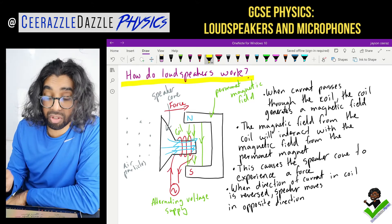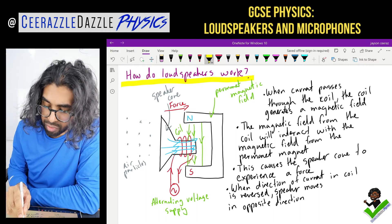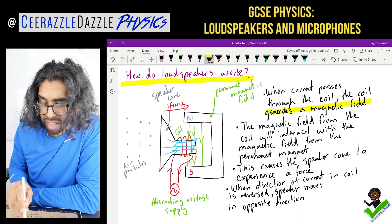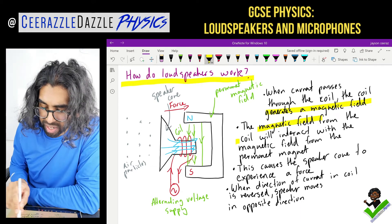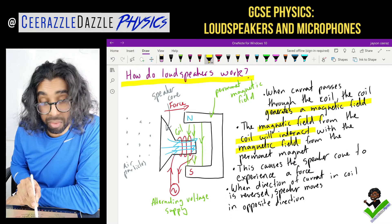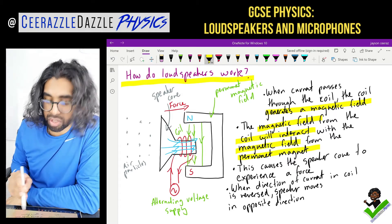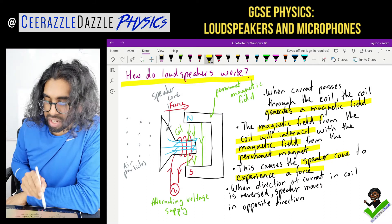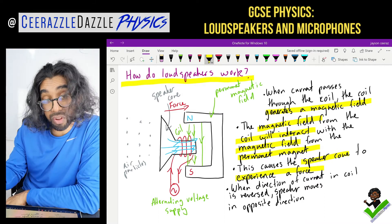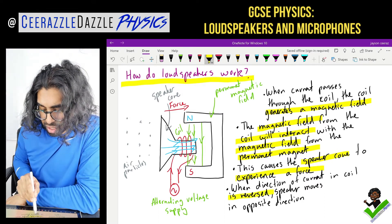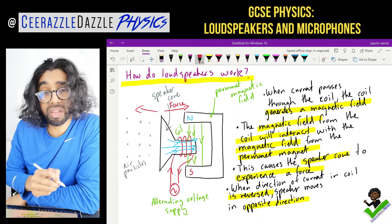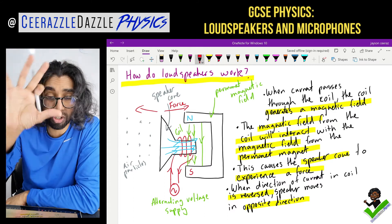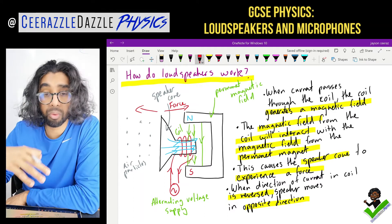Let's highlight some key terms for the exam. When current passes through the coil, the coil generates a magnetic field. The magnetic field from the coil interacts with the magnetic field from the permanent magnet, causing the speaker cone to experience a force. When the direction of the current in the coil is reversed, the speaker moves in the opposite direction. Make sure you can describe this from the diagram without any help.